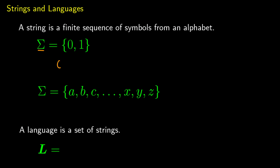So you could just have zero as a string, or one as a string, or any combination of the two — like 1, 0, 1, 0, 0, 0, 1, 1, 1, 1, or we could take 10,000 ones. It just has to be finite.